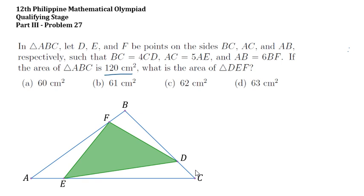I'll start with the representations of some side lengths in the figure. Let's focus first on BC. Take note, BC is 4 times CD. So if I represent CD with x, BC must be 4x and BD must be 3x.